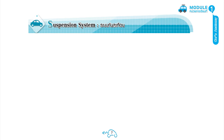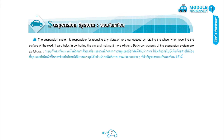Page 7. Suspension System. The suspension system is responsible for reducing any vibration to a car caused by rotating the wheel when touching the surface of the road. It also helps in controlling the car and making it more efficient.